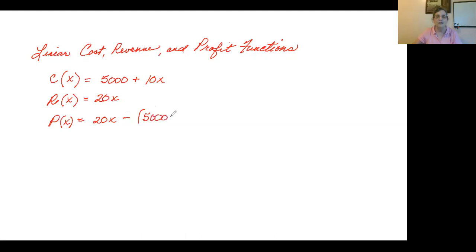And 90% of the time when somebody makes a mistake on this, it is because they didn't carry this negative through. Your profit is $20 times the number of units minus the $5,000 fixed cost you have minus the $10 per unit that it costs to make.